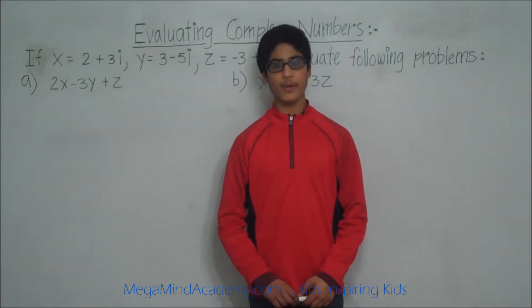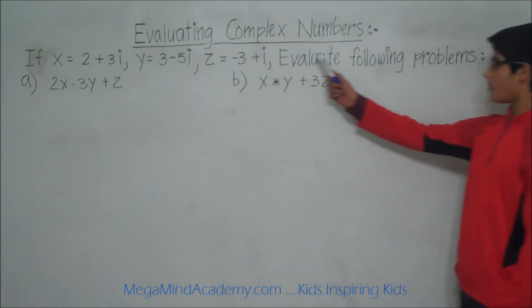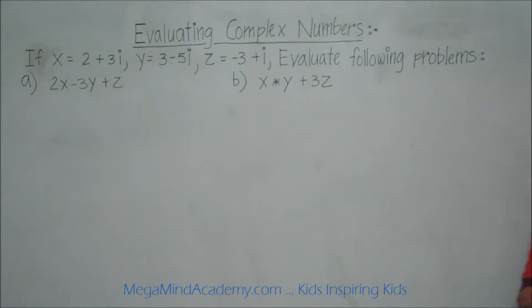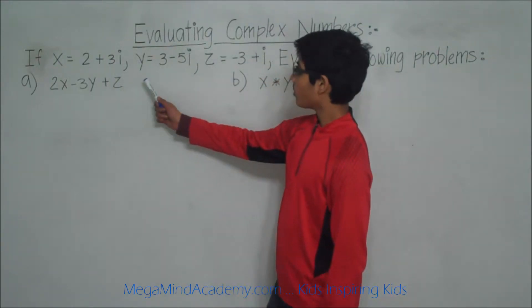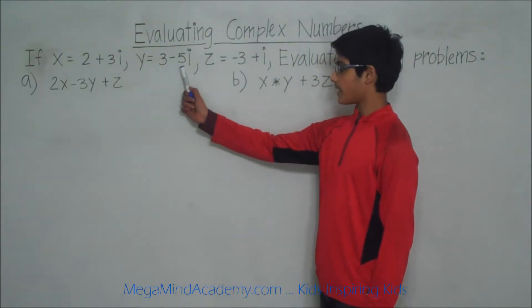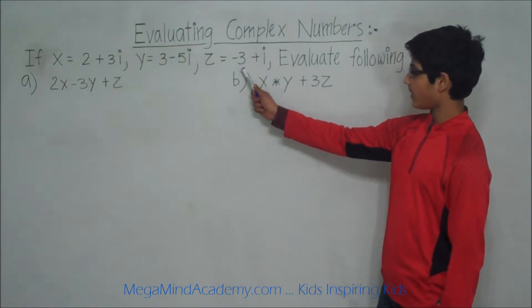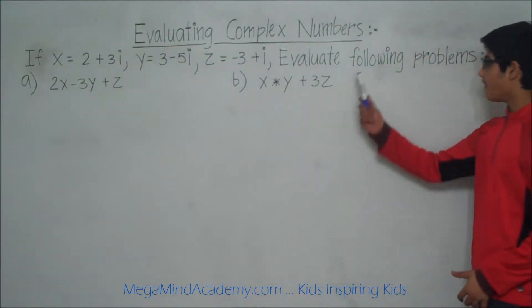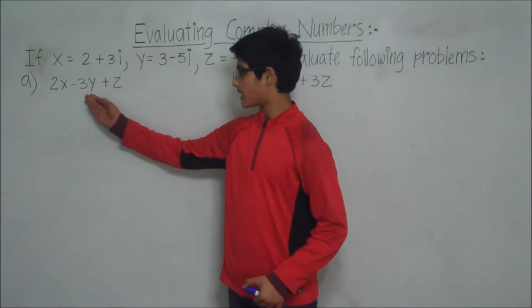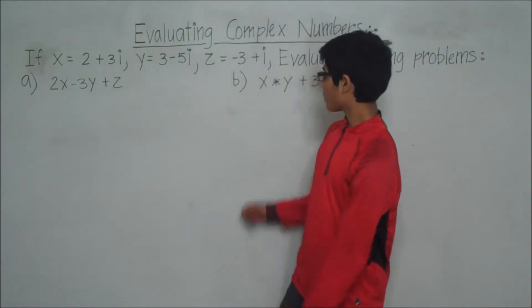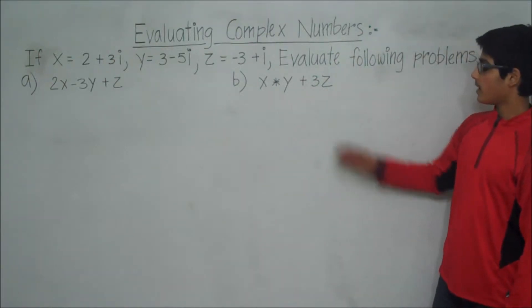Hi! Today we're going to learn about evaluating complex numbers. Let's say that x is 2 plus 3i, y is equal to 3 minus 5i, and z is equal to negative 3 plus 5. Evaluate the following problems: A, 2x minus 3y plus z, and B, x times y plus 3z.